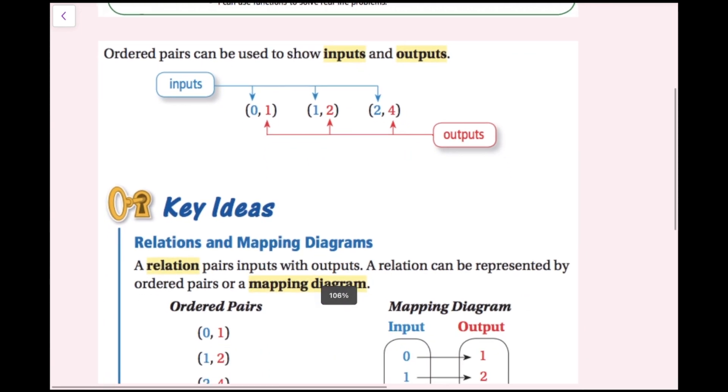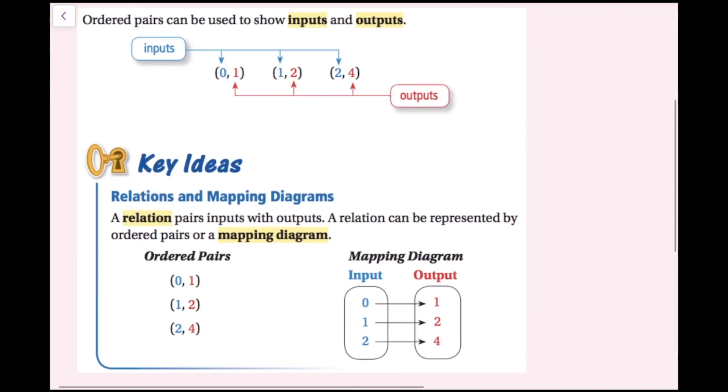I'm going to scroll down here. Ordered pairs can be used to show inputs and outputs. The input of the ordered pair is usually our x value, and our output is usually the y value. So if the ordered pair is written like x comma y, x you can think of as being the input, and then y is the output.